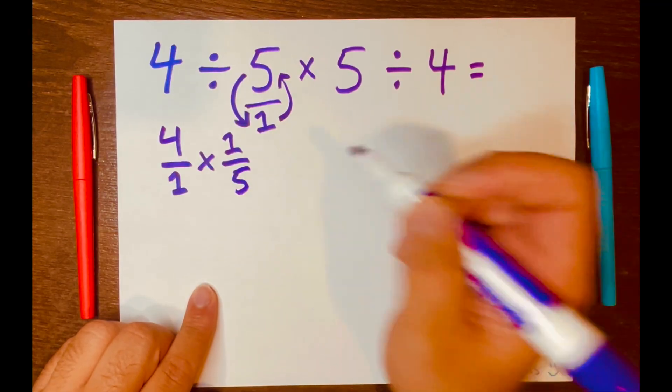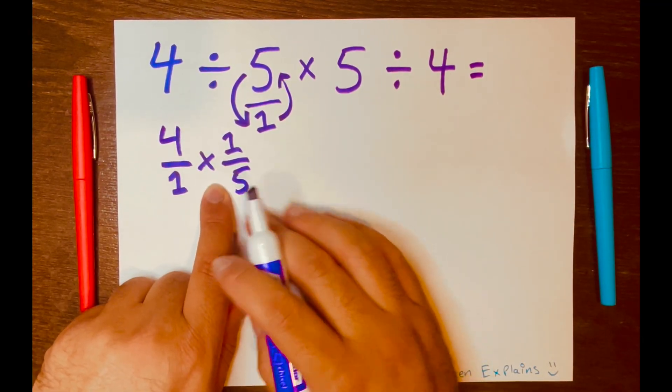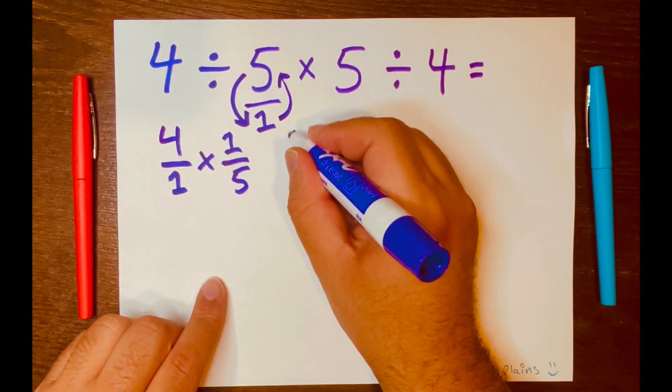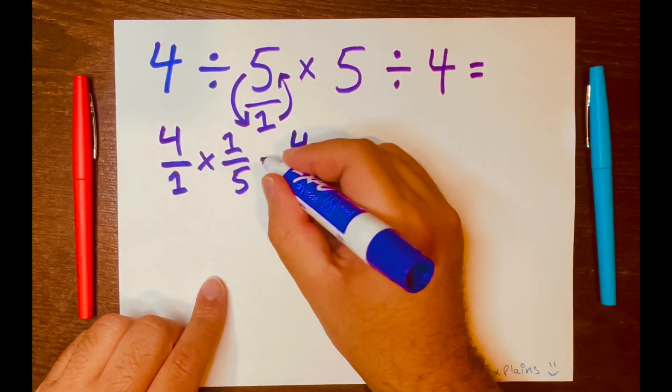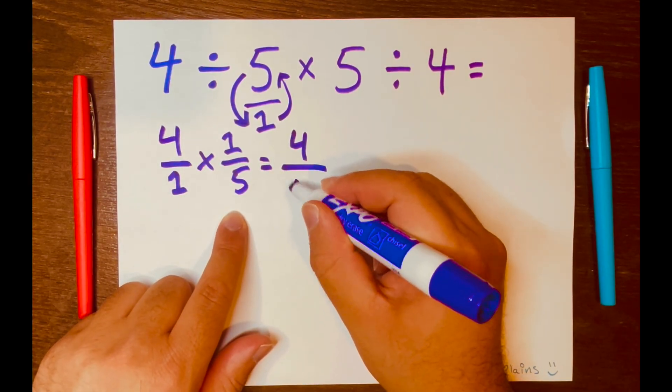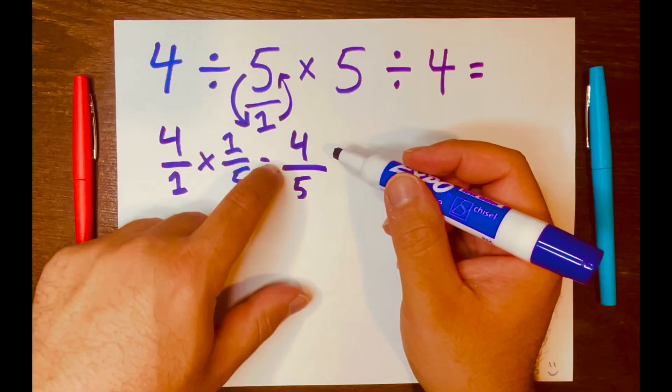And then I go ahead and multiply across. 4 times 1 is 4, over 1 times 5 is 5. So now we have 4 over 5.